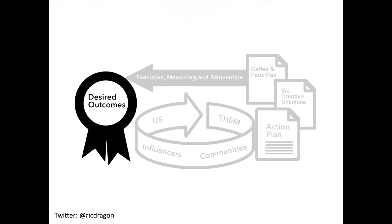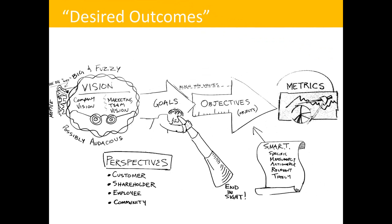Desired outcomes is extremely critical. We call it that rather than just 'goals' because it's bigger than goals — we're talking about purpose and vision on one side of the spectrum, and then very specific metrics on the other. It's an entire landscape of desired outcomes, and every project we do starts with a deep dive into this. When I was writing the book I interviewed a few dozen social media marketers — the head of social for SAP, Intel, and others — and pretty much everybody voluntarily noted that what most social media marketing lacks is alignment with desired outcomes, goals, and objectives.